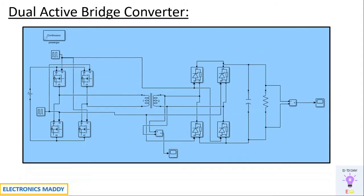This is the MATLAB model of a dual active bridge converter — it's basically a DC-to-DC converter. What is happening in this circuit: you have a DC source, it's converted to AC by using an inverter, this AC voltage is increased or decreased using a transformer, and it is given to a rectifier section. Consequently AC is converted to DC, and you have a capacitor to filter the DC output voltage.